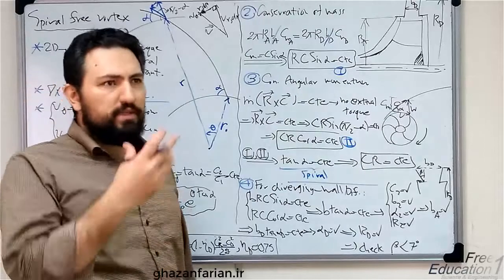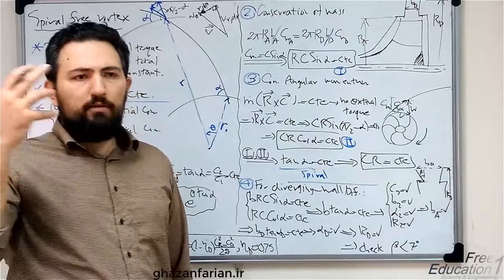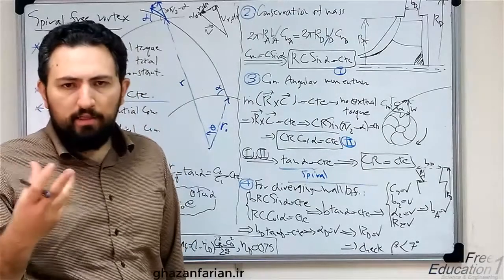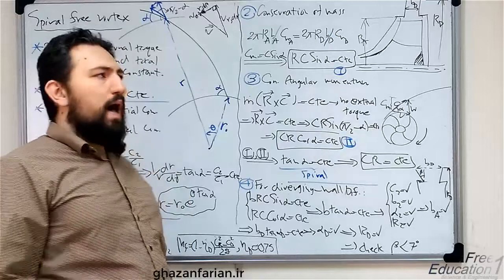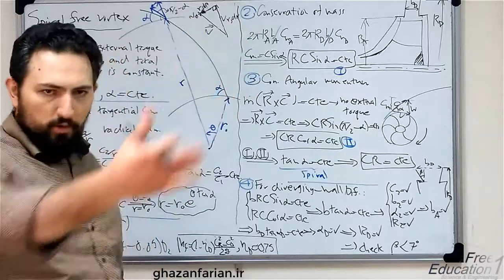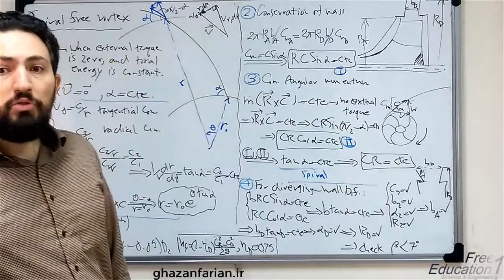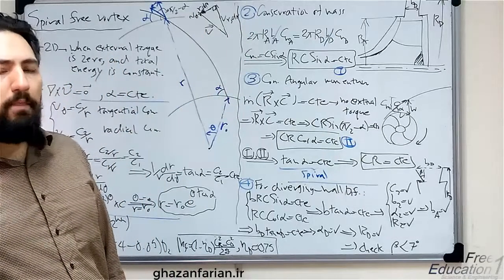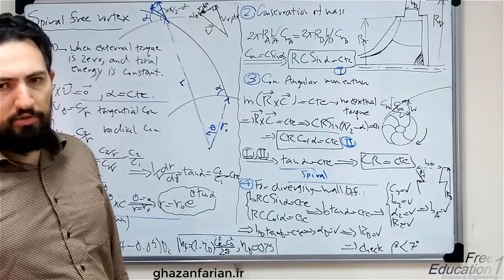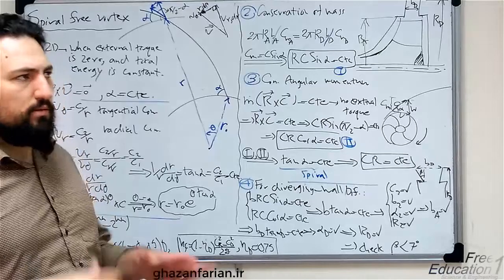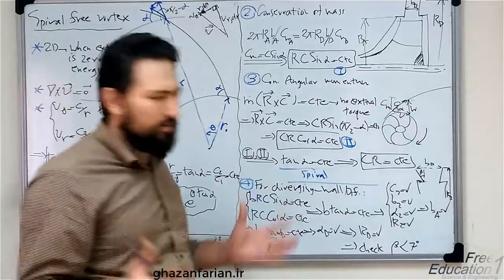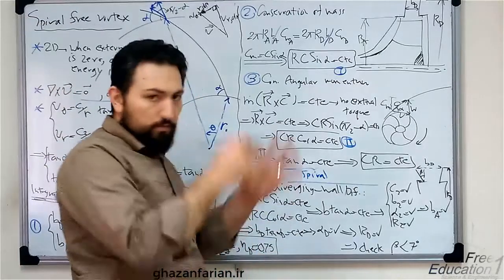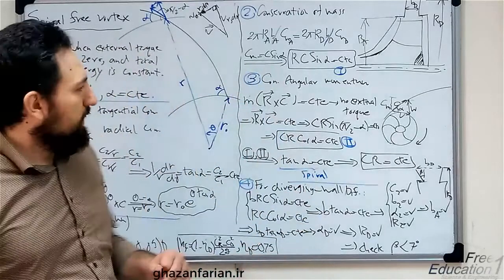This way I can convert the kinetic energy of the outgoing flow into pressure energy and consequently reduce the losses in the diffuser and in the volute.